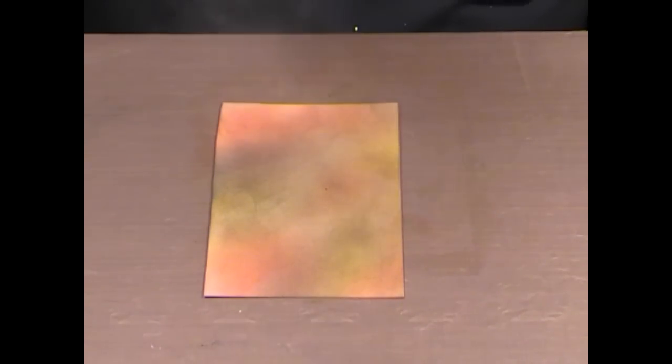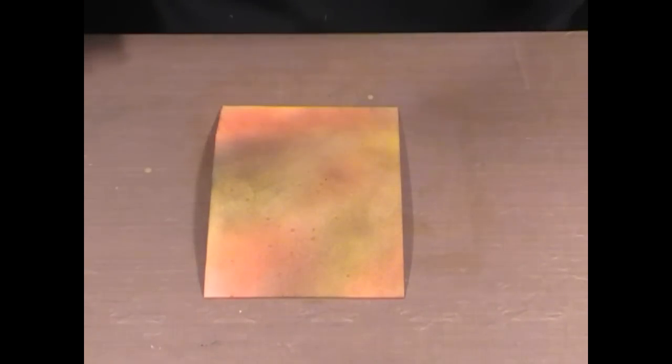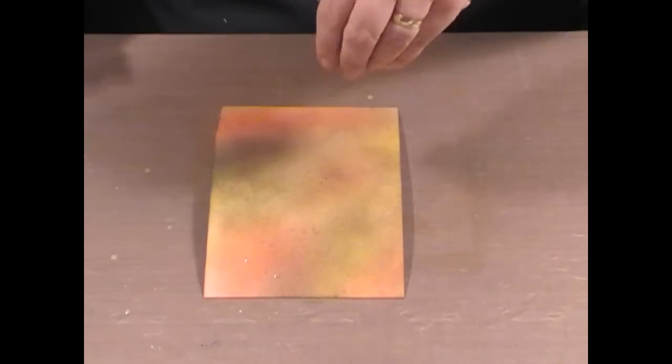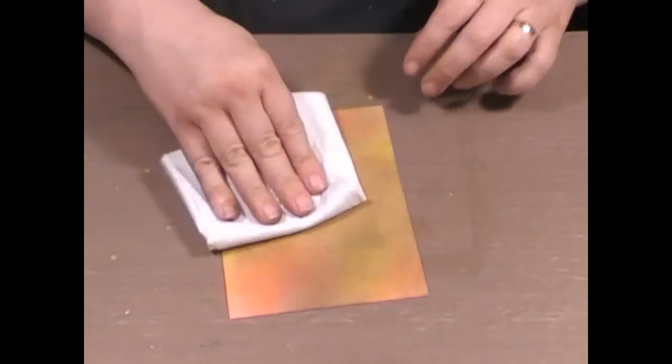One thing you can do is just spritz it with some water or even better drop some water on with your hands. Make sure you drop the water down, not flick it, and then immediately just blot it. You get some texture in the background as well.